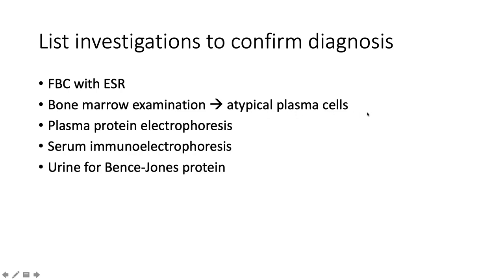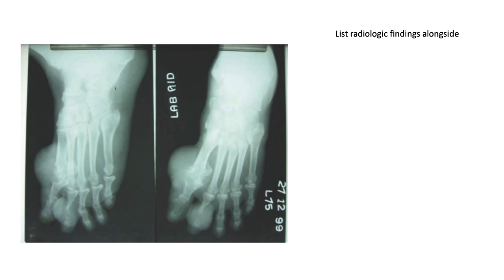Watch out for peripheral features and complications of multiple myeloma: hypercalcaemia, renal impairment, anaemia, bony lytic lesions, hyperviscosity, amyloidosis, and bacterial infections due to immunoparesis.